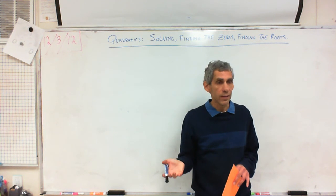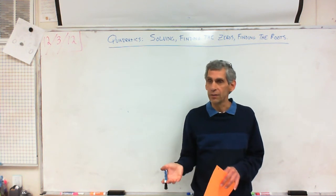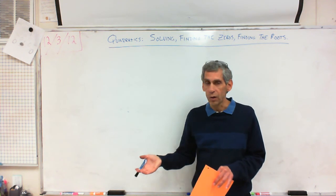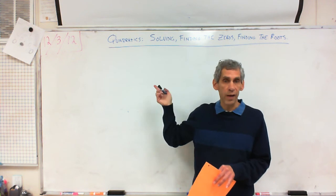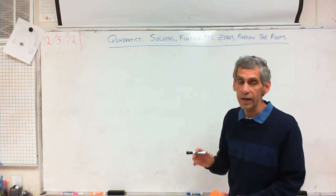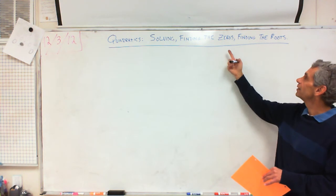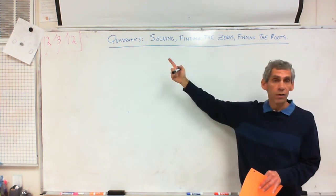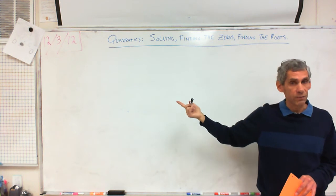For example, 2 plus x equals 10 — now you can solve for x. But if you just have 2 plus x, you can't solve for x, because you've got to know what it equals. The same thing's true with quadratics — you've got to have an equation. So the question is, what are we trying to find when we're trying to find the zeros, or find the roots, or solve for x?